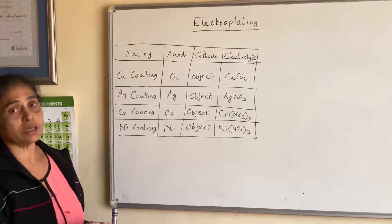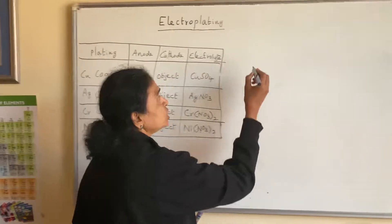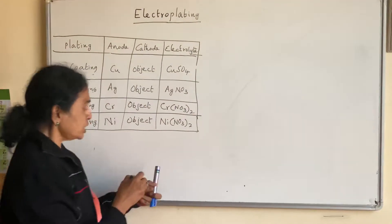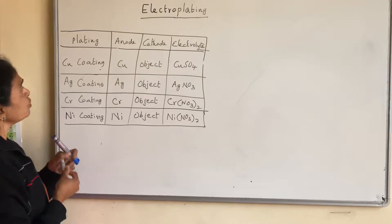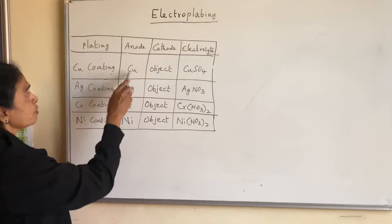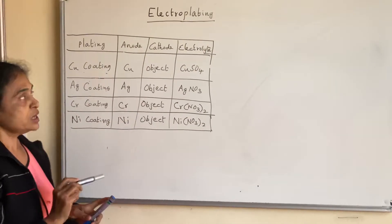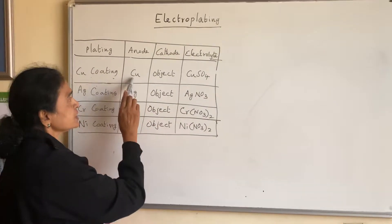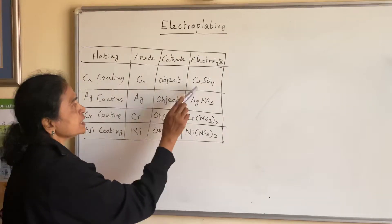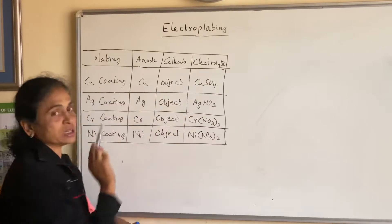What is happening in electroplating? In electroplating, there is one condition you have to remember. If you want to give a coating of copper on an object, the electrolyte must have the same thing. It must have the ions of that metal.